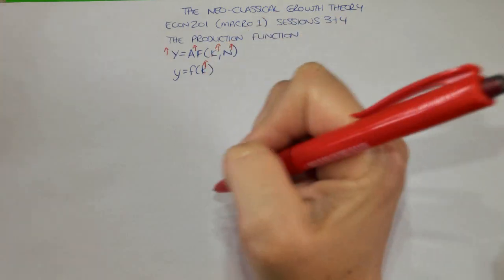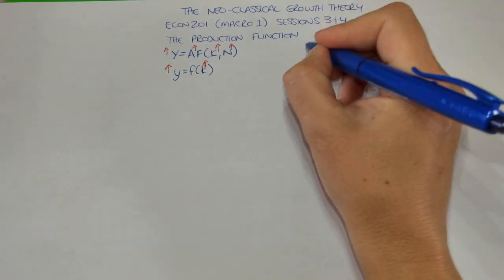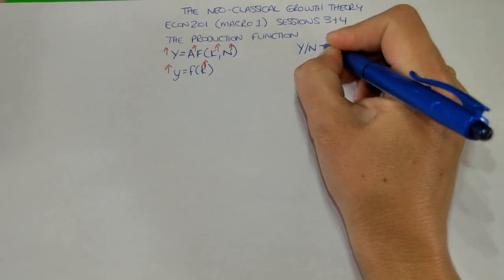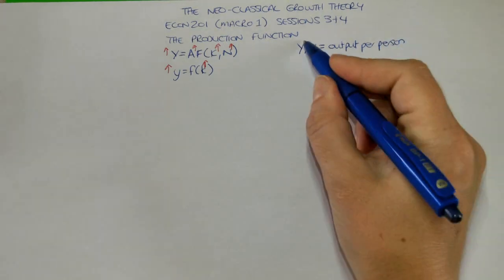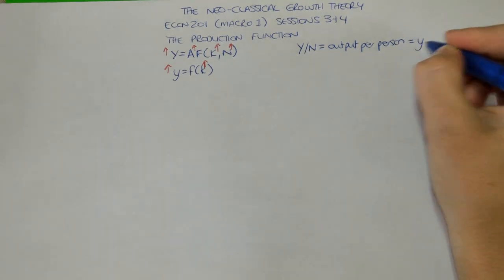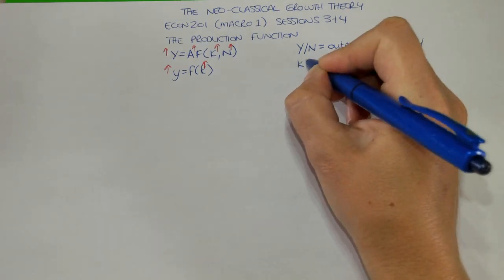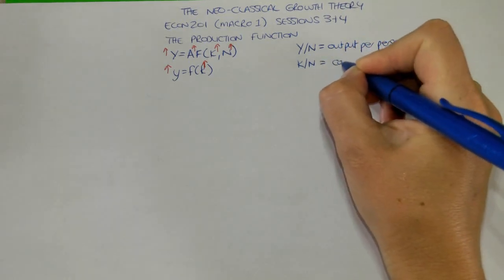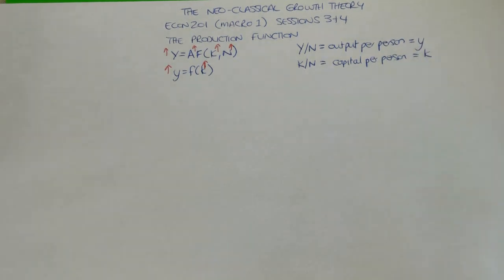Increases in capital stock per person will increase output per person. If we want to quickly look at the link between the aggregate production function and the per capita production function, note the following: total output divided by the population size gives us output per person — the left-hand side of our per capita production function. And taking the total capital stock and dividing it by the population size gives us capital per person, the right-hand side of our per capita production function.